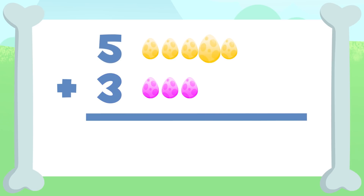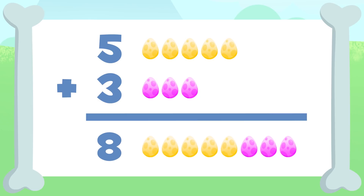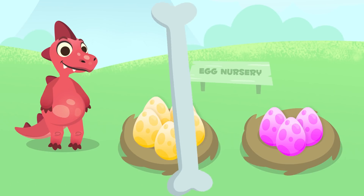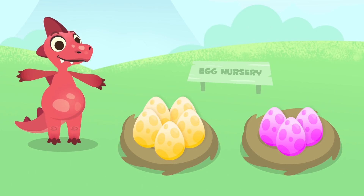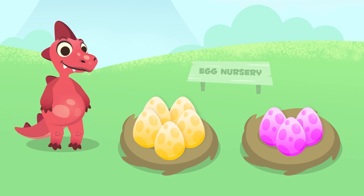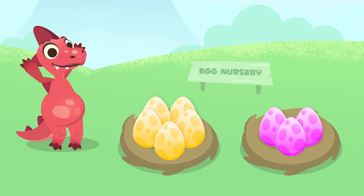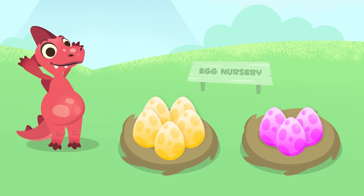So the result is one, two, three, four, five, six, seven, and eight. We have eight eggs! Five plus three equals eight. Well done, Dino! Today you need to look after eight dinosaur eggs. Now you know how to add up!